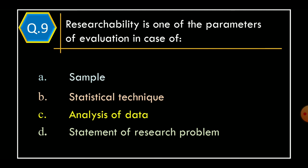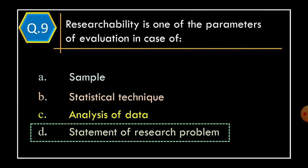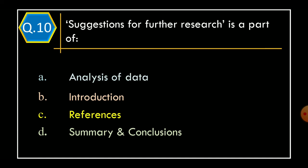Question 9: Researchability is one of the parameters of evaluation in the case of — Option A: Sample. Option B: Statistical Techniques. Option C: Analysis of Data. Option D: Statement of Research Problem. The correct option is Option D, Statement of Research Problem.